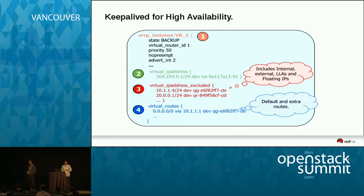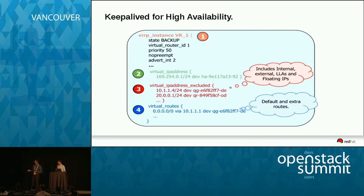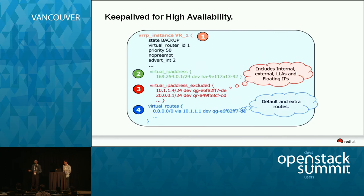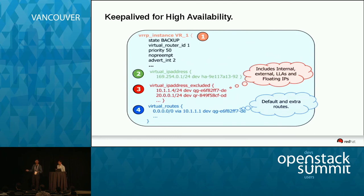This slide shows how a keepalived configuration file looks. The first section has the VRRP virtual router ID, which is unique for each HA router, along with other parameters like priority and advertisement interval. The second section has the virtual IP address — any HA router that becomes master will have this IP, while backup routers will not. Sections three and four contain IP addresses and virtual routes configured by the master router onto the QR ports.